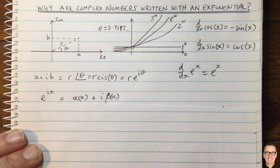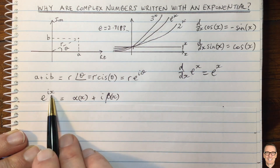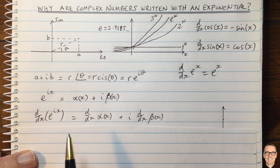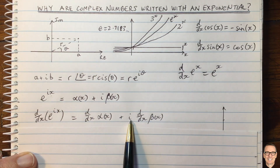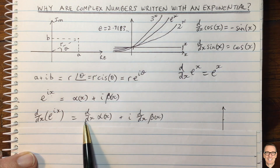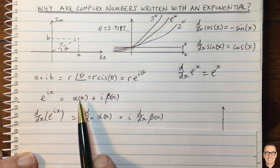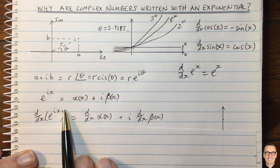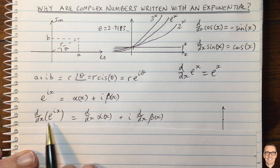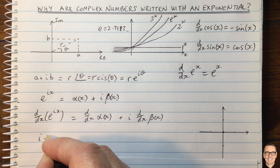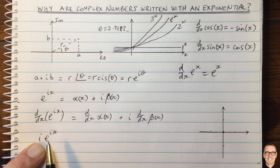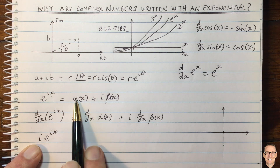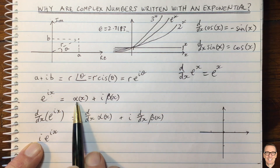Is e to the ix a growing function? That's what often confuses people. If we take the derivative of e to the ix with respect to x, by linearity of derivatives it equals the derivative of alpha plus i times the derivative of beta. But using the special property of e, the derivative of e to the ix is simply i times e to the ix.